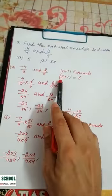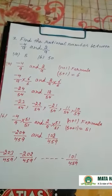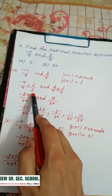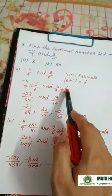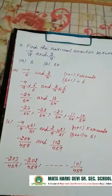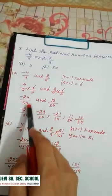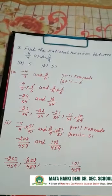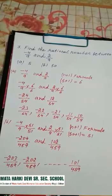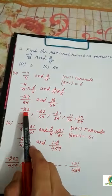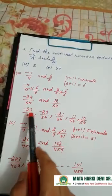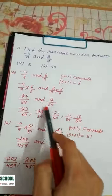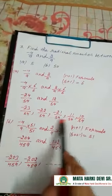For part A, finding 5 rational numbers: 5 plus 1 is 6. Multiply 6 to numerator and 6 to denominator on both sides. So 6 times 4 is 24, 9 times 6 is 54, giving minus 24 by 54. And 6 times 2 is 12, 9 times 6 is 54, giving 12 by 54. Between these, the rational numbers are: minus 23 by 54, minus 22 by 54, minus 21 by 54, 11 by 54, 10 by 54. You can write any 5 rational numbers.